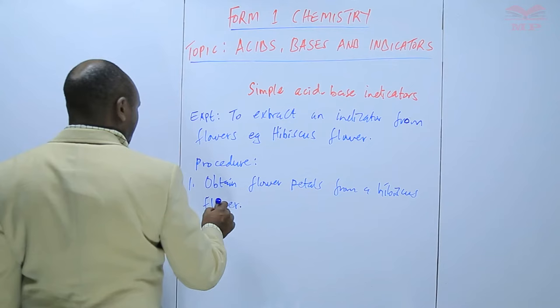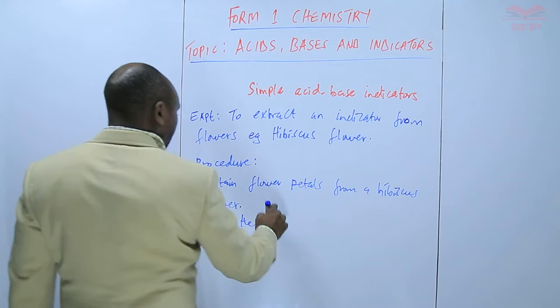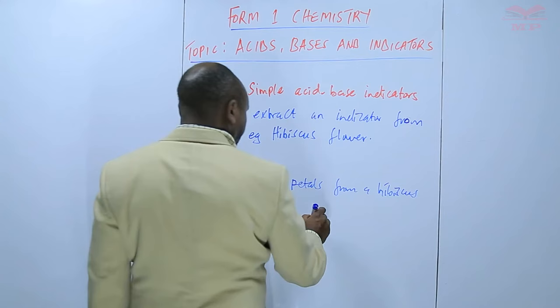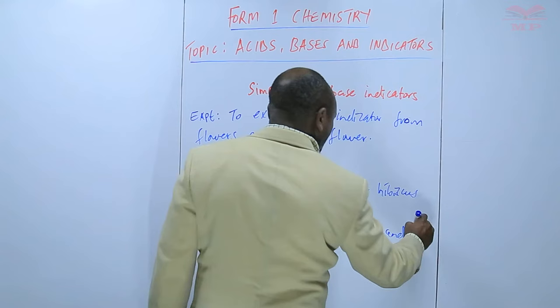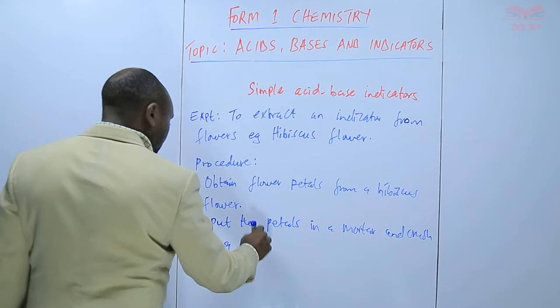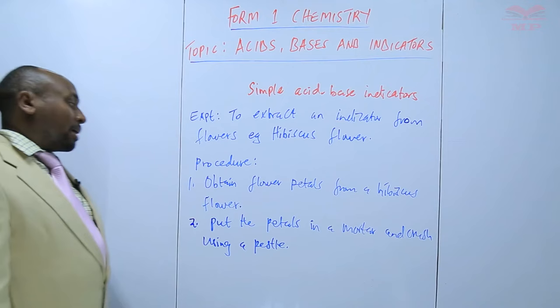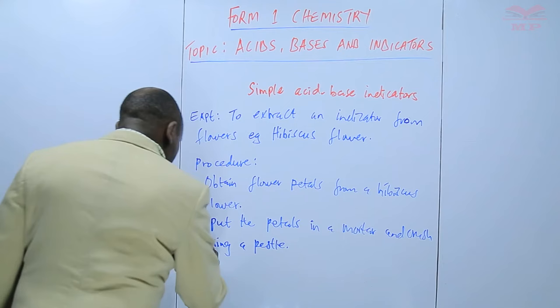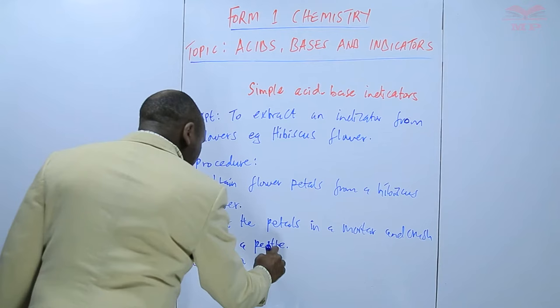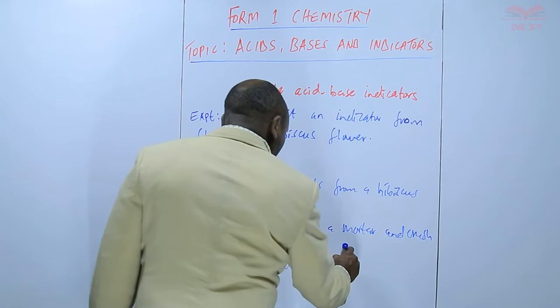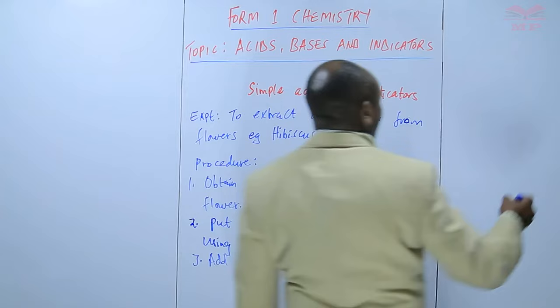Then step number two, we put the petals in a mortar and crush using a pestle. And then the next step, add a suitable solvent, for example ethanol or propanone.